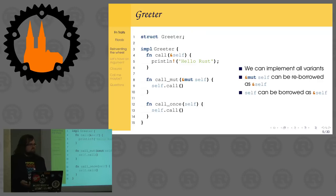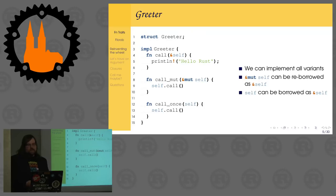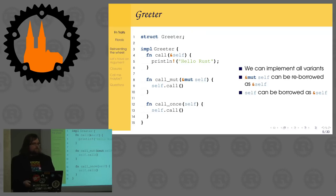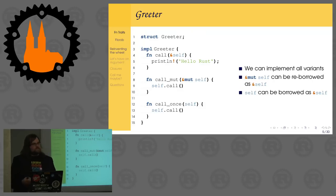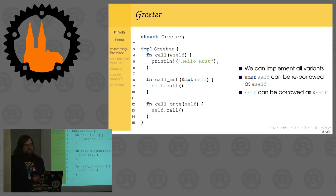We can use all three of the first three variants if we'd want to, in various cases. What this does is basically just rename them: call takes a reference, call_mut takes a mutable reference, and call_once — because if you use it by value and you move it, you can't use it a second time. Then call_mut and call implement the two later ones in terms of the first one.